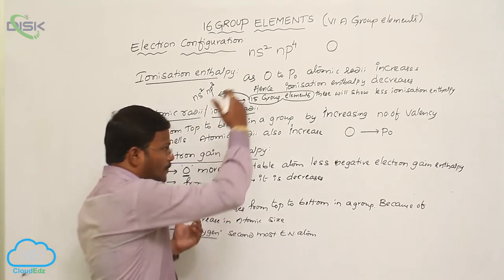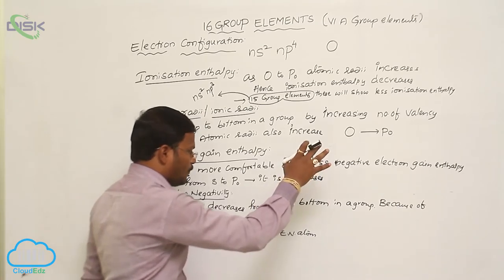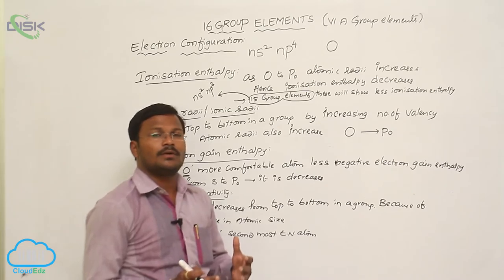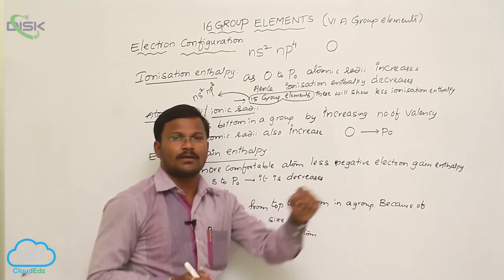From top to bottom in a group, or oxygen to polonium, the electronegativity of these elements decreases. Oxygen is the second most electronegative atom in the periodic table.